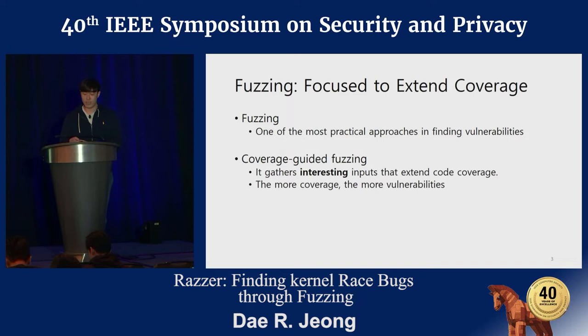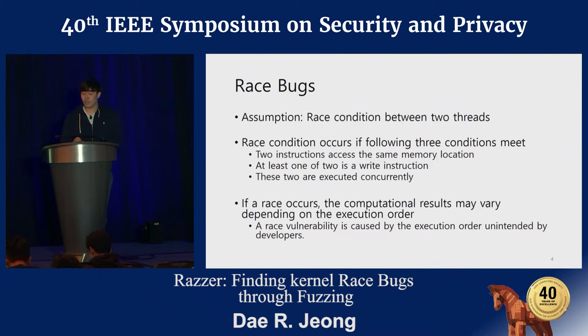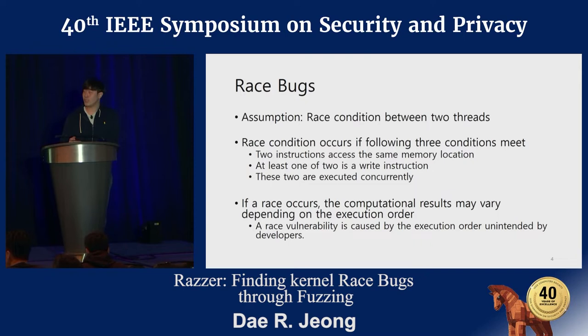Using the fuzzing techniques, our research starts from thinking about how the fuzzing would work for race bugs. Before answering the question, let me introduce the basics of race bugs. To easily explain our work, I am going to assume that a race condition occurs between two threads. To have race conditions, the following three conditions should be satisfied: first, two instructions access the same memory location; second, at least one of them is a write instruction; and third, two instructions are executed concurrently.